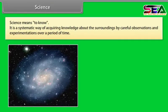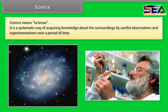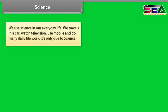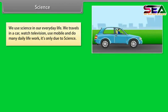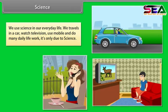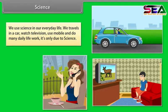Science. Science means to know. It is a systematic way of acquiring knowledge about the surroundings by careful observations and experimentations over a period of time. We use science in our everyday life. We travel in car, watch television, use mobile and do many daily life work. It is only due to science.